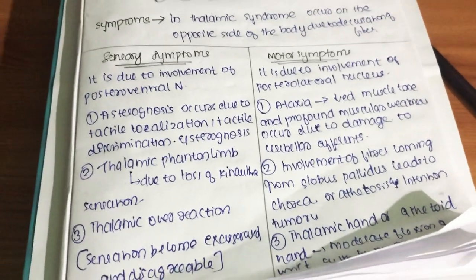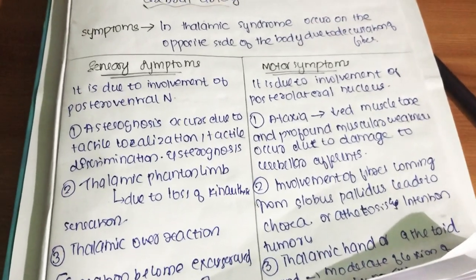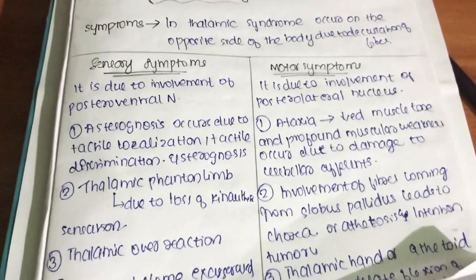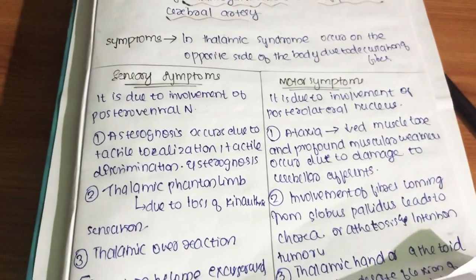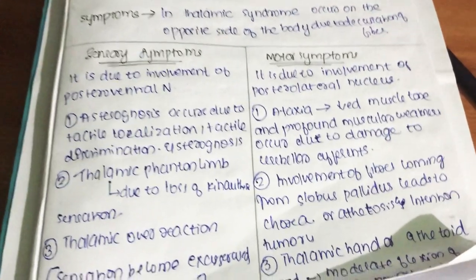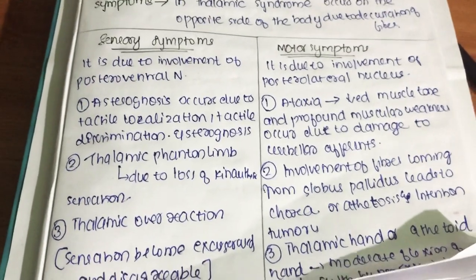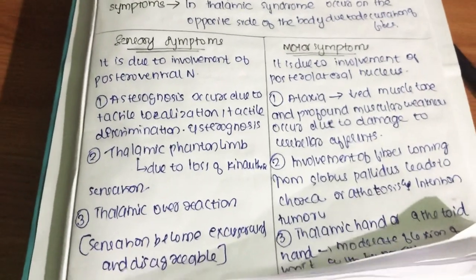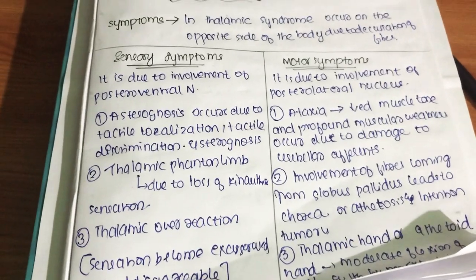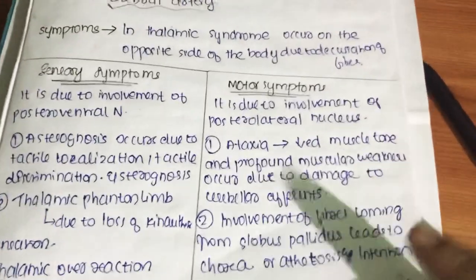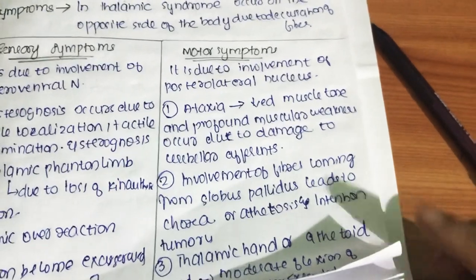The third sensory symptom is thalamic overreaction. This means the threshold for the sense of touch, pain, and temperature becomes lowered, so even a minor stimulus produces an exaggerated and disagreeable sensation.